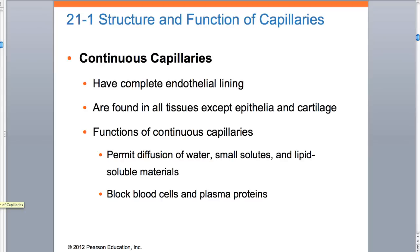Continuous capillaries allow for movement of water, solutes, and lipid-soluble materials, but they do not allow blood cells and plasma proteins to pass. That will come up later in the chapter. You do not want blood cells and plasma proteins leaking into your urine, so somewhere we must have something like a continuous capillary in the kidney system.